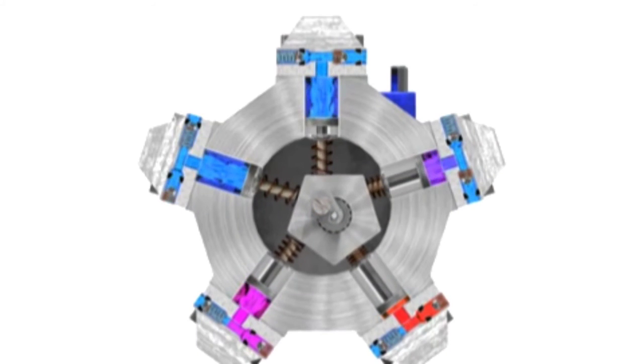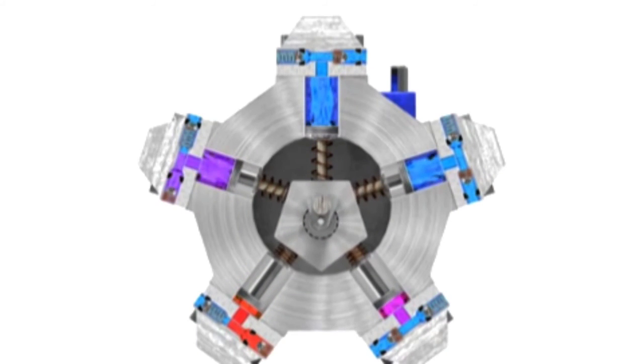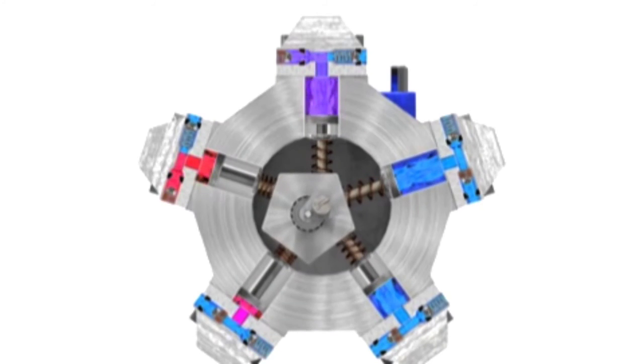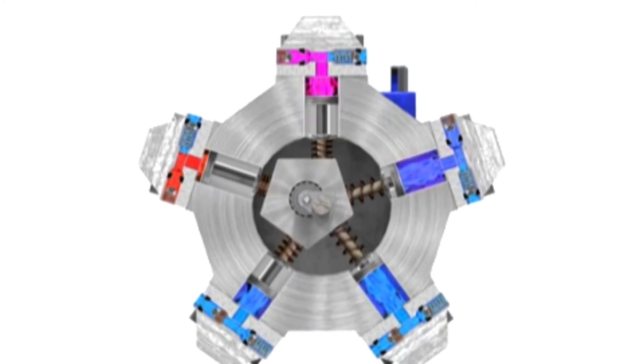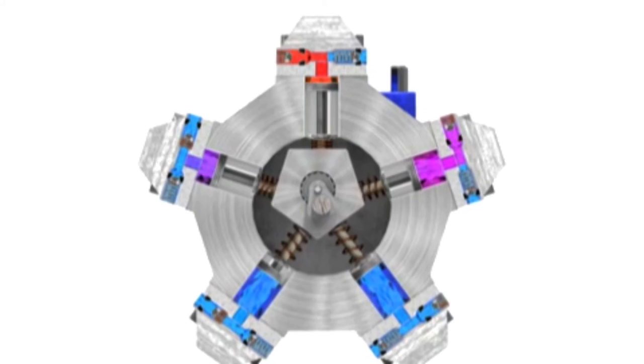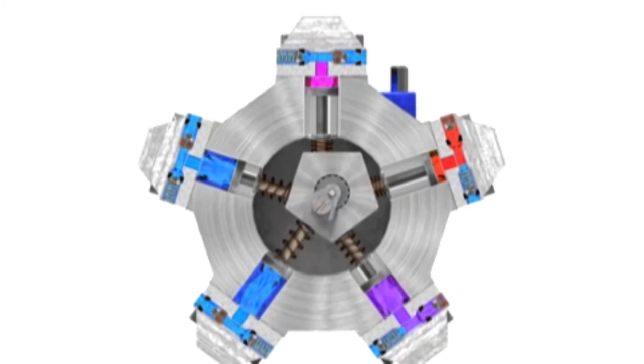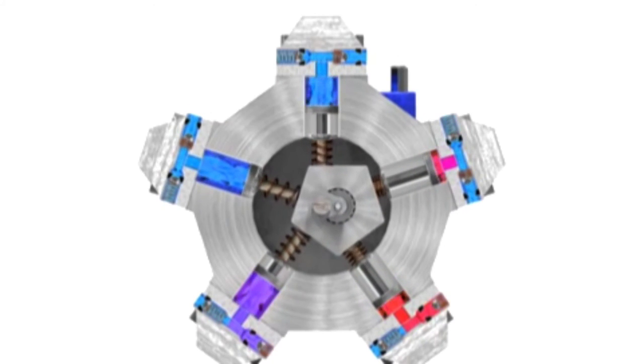As the shaft rotates, the cam moves towards the pistons, forcing them down into the cylinder block and discharging the fluid. As the cam moves away, springs help retract the piston and cause the intake stroke.